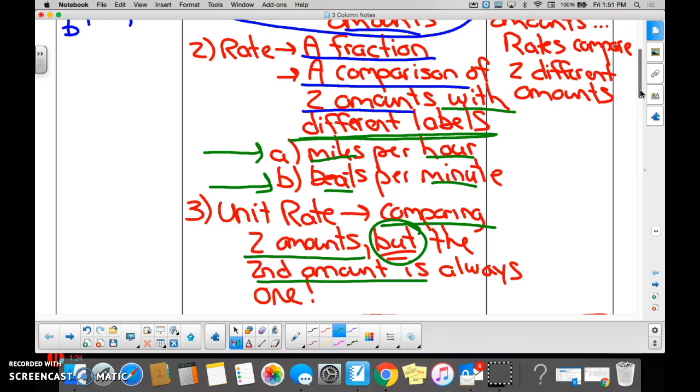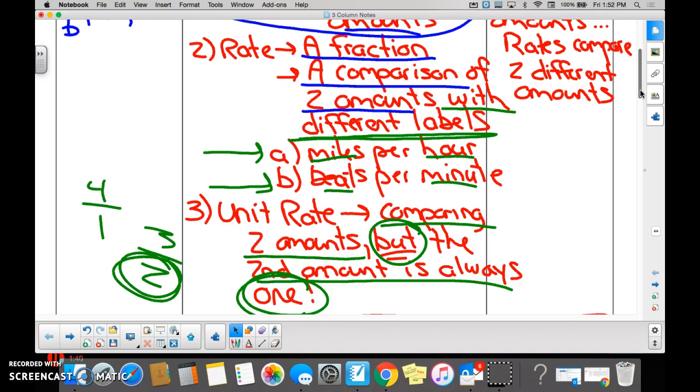But, the second amount, or the second number is always going to be the number one. So, we don't know the labels at all, but would that be considered a unit rate? Yes. Would this be considered a unit rate? No. Because why? That's not a number one.